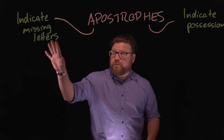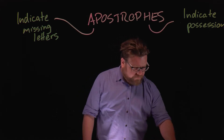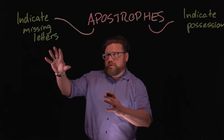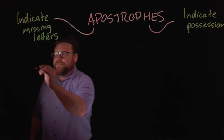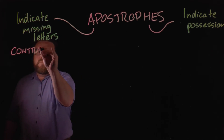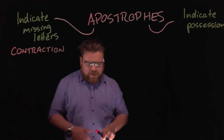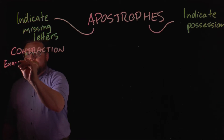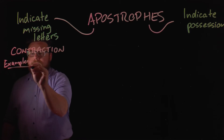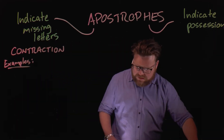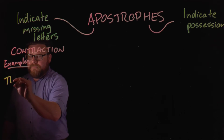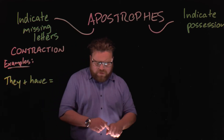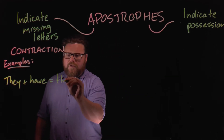Let's look at the first use of apostrophes first — indicating missing letters. Another word for the type of words we get when we use an apostrophe to indicate missing letters is a contraction. So all of the words we're going to look at with these examples are contractions. Some examples are words such as 'they' plus 'have.' If we look at the contraction of 'they' plus 'have,' we get the word 'they've.'